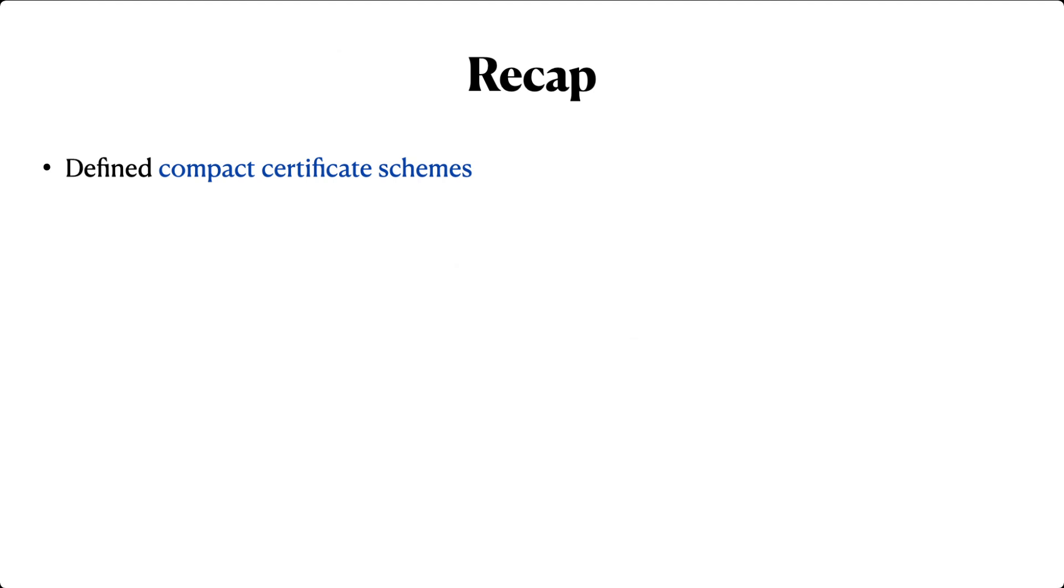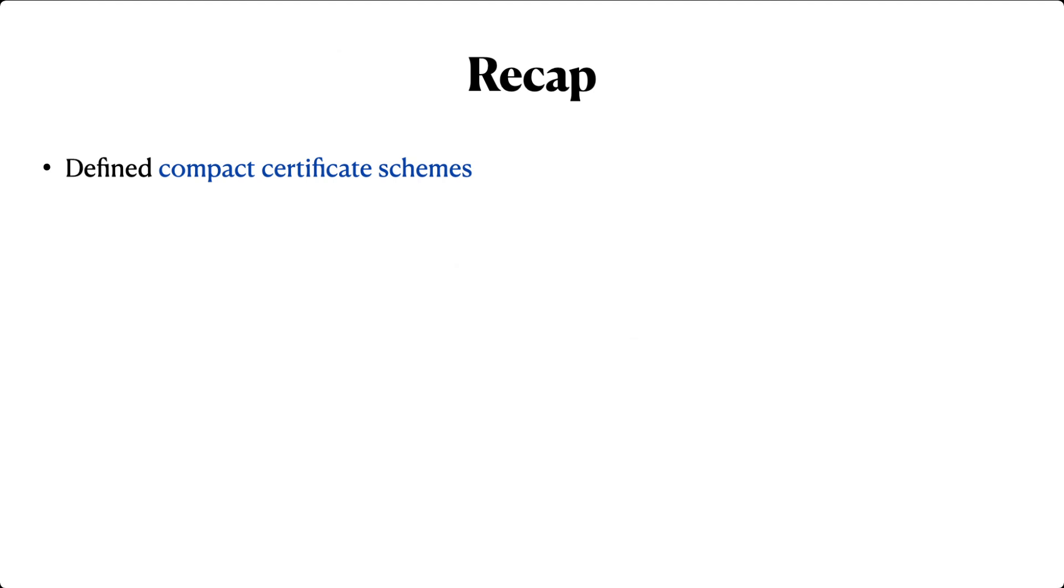To quickly recap, in this work we defined a new cryptographic primitive called a compact certificate scheme. We gave a concretely efficient construction for Merkle trees. For 1 million attesters, this construction gives certificates that are 50 to 280 times smaller and 300 to 4,000 times faster to verify than the natural baseline.